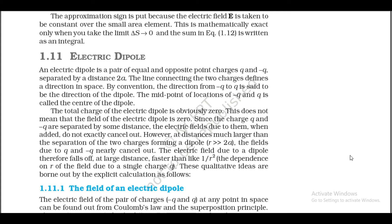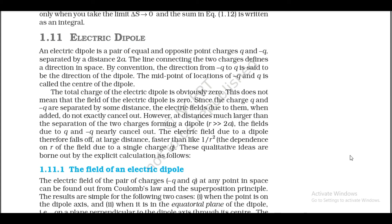1.11 Electric Dipole. An electric dipole is a pair of equal and opposite point charges q and −q separated by a distance 2a. By convention, the direction from −q to q is said to be the direction of the dipole. The midpoint of the locations of −q and q is called the center of the dipole. The total charge of the electric dipole is zero. This does not mean that the field of the electric dipole is zero — since q and −q are separated by some distance, the electric fields due to them when added do not exactly cancel out. At distances much larger than 2a, the fields due to q and −q nearly cancel out, so the electric field due to a dipole falls off faster than 1/r² at large distances.